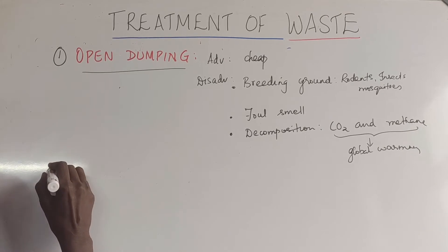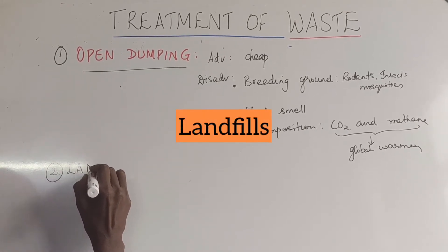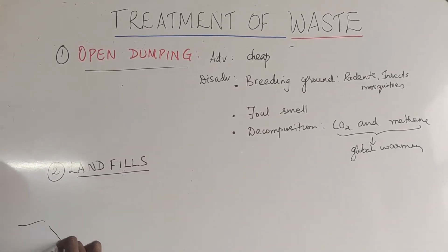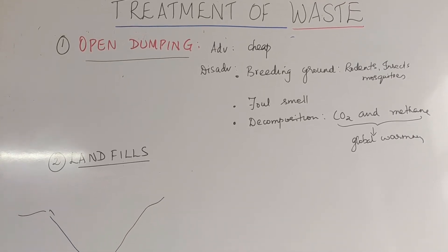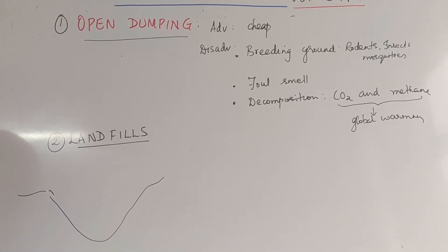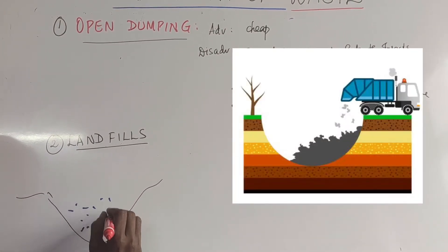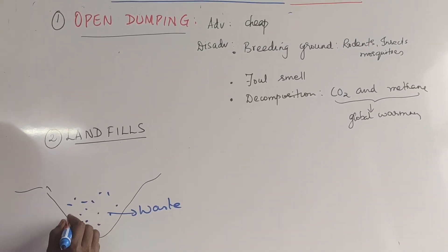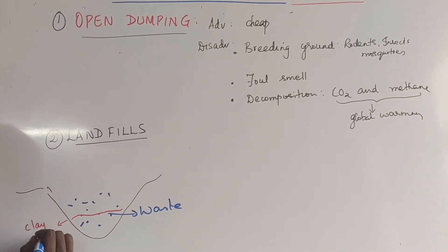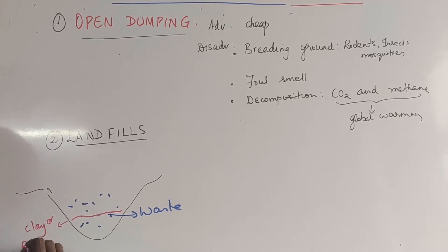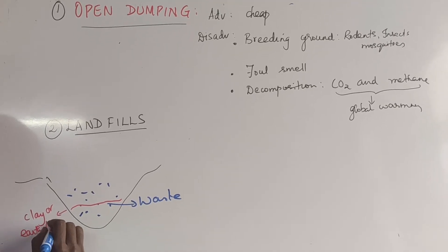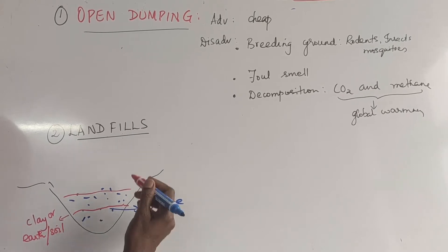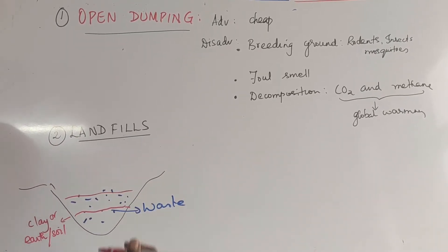Now we move on to the second method: landfills. This is almost similar to open dumping. The difference is that they excavate some area of land, and it is filled with all the waste. Every day after it is filled, you have a layer of clay, earth, or soil that is put on it. Again waste is dumped, again a layer. So this is how the land is filled — this is landfills.